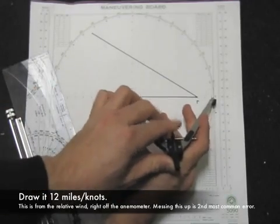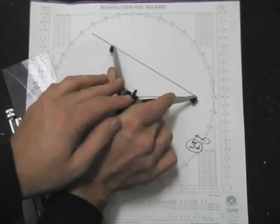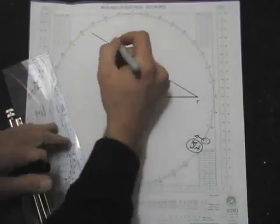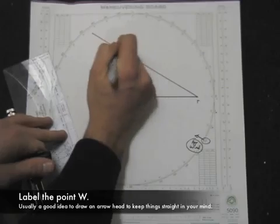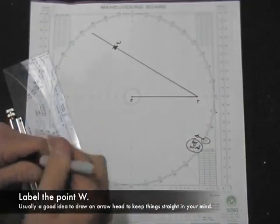And we're using a 1 to 1 scale in this case, so whenever you're choosing the scales, take a look at the anemometer, see what the wind is reading, and that will help you determine it. So we draw about 12 knots, 12 miles, in the direction of R to W. We label it W. I always like to draw an arrow to keep things straight in my mind, to let me visualize which way the wind is blowing on a compass.